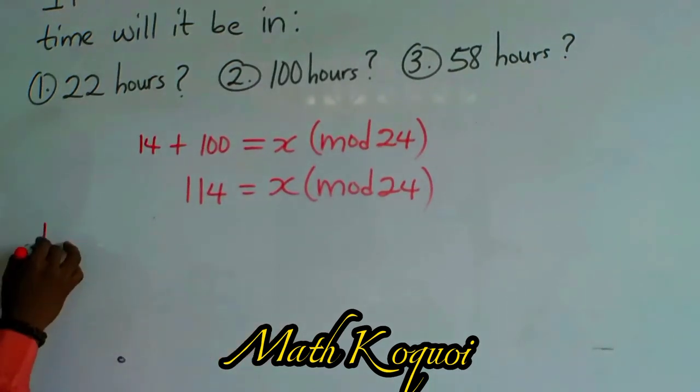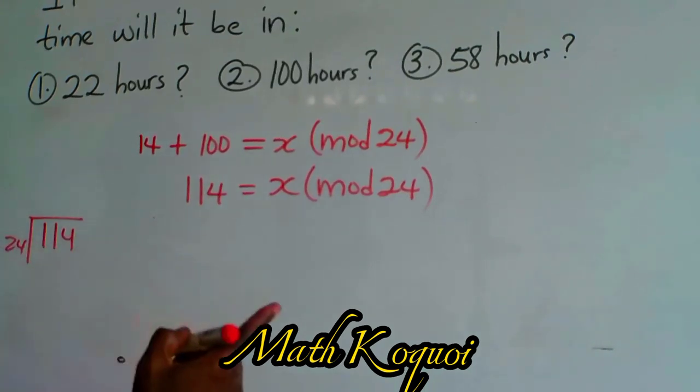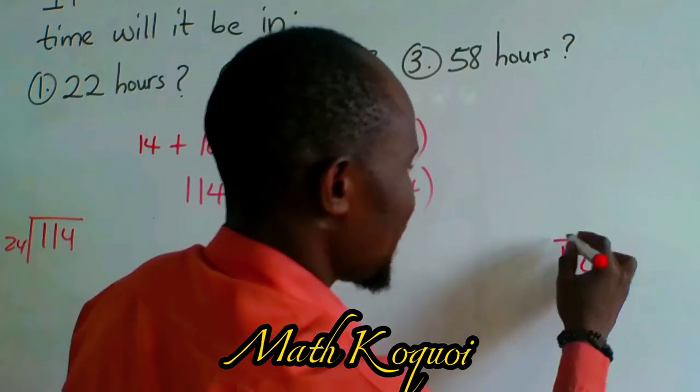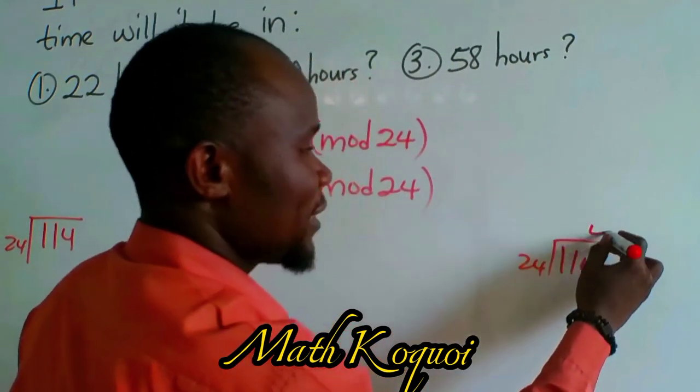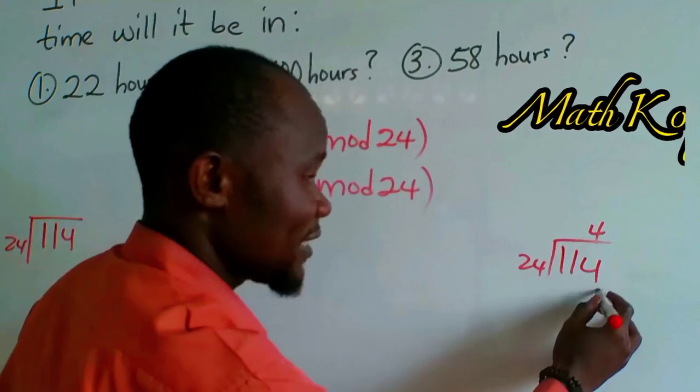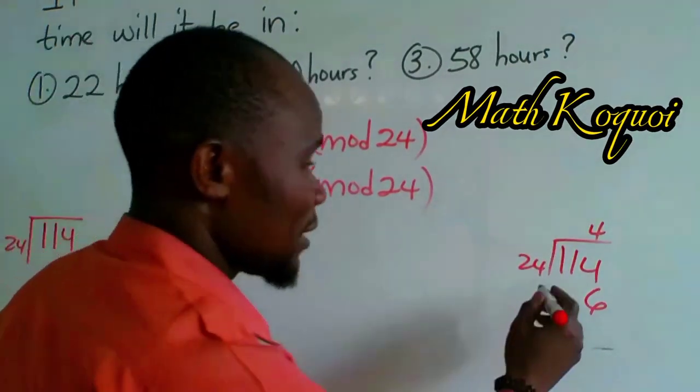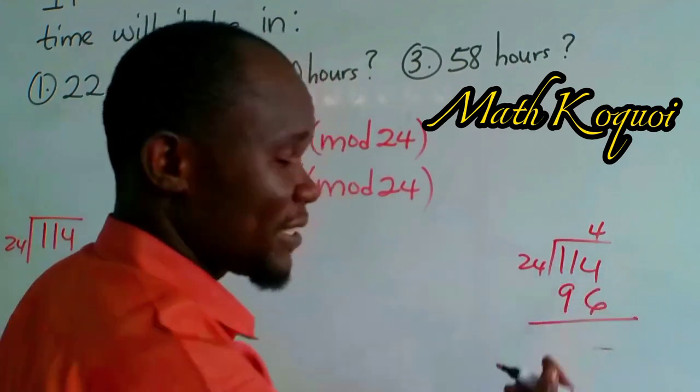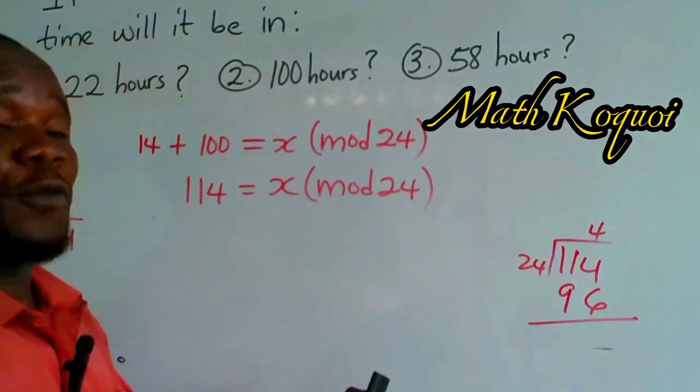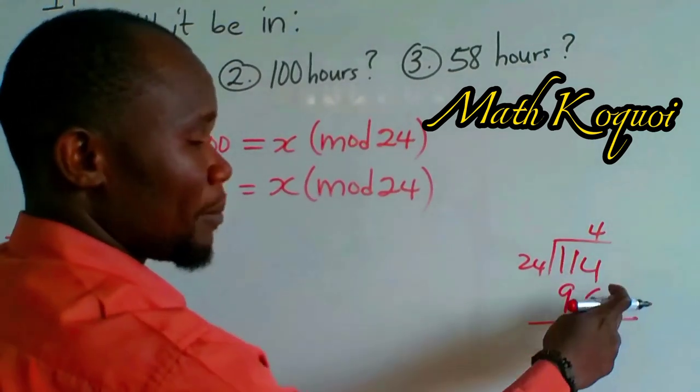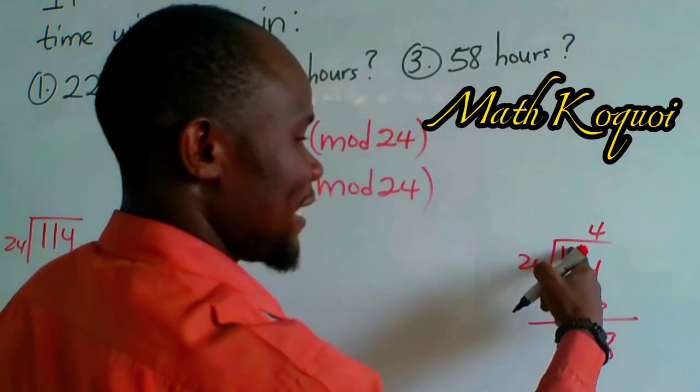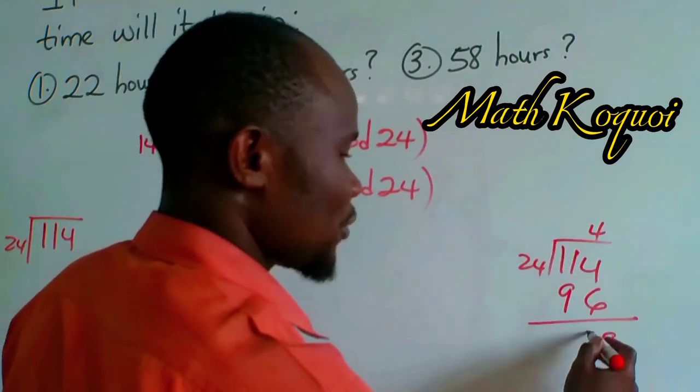We say 140 divided by 24. Let me bring it somewhere here, 114 divided by 24. So we say 4 times. 4 times 4 gives us 16, 4 times 2 is 8 plus 1 gives us 9. This 4 minus 6 cannot go, 1 is 10 plus 4 gives us 14, 14 minus 6 gives us 8. And this is 10 here now, 10 minus 9 gives us 1.